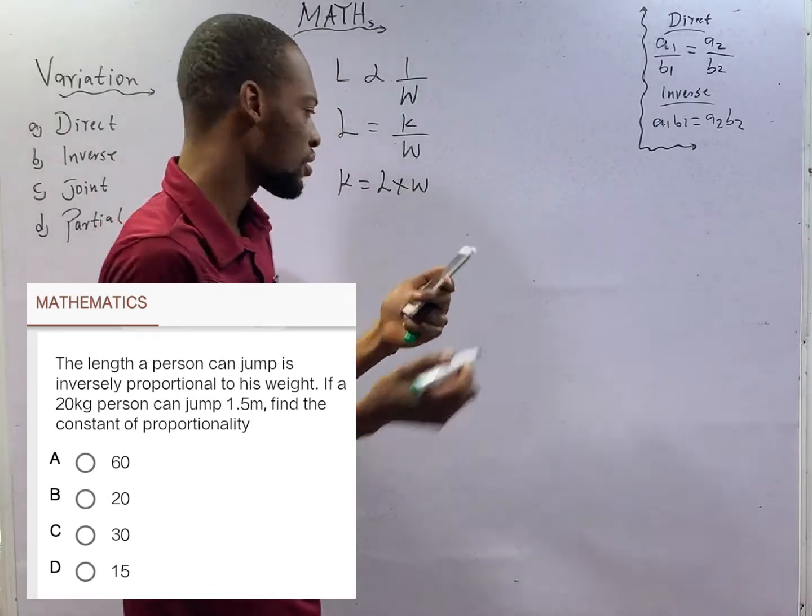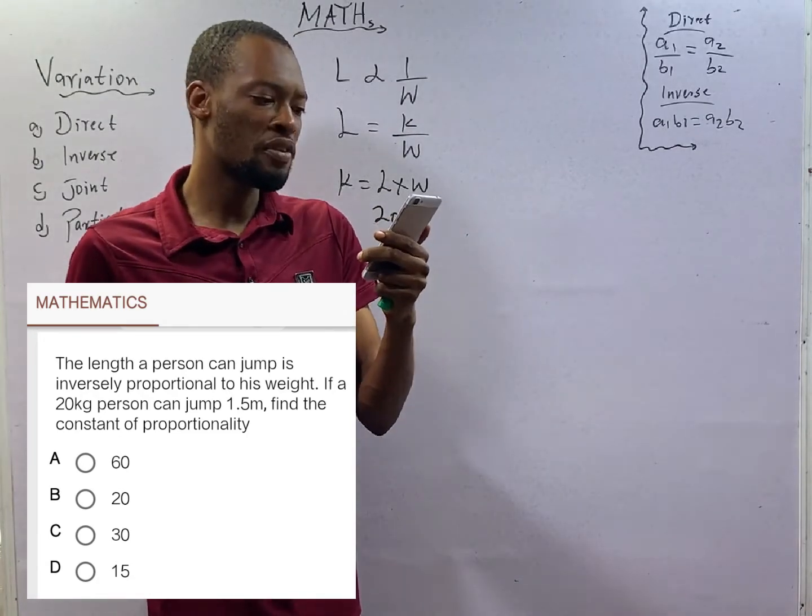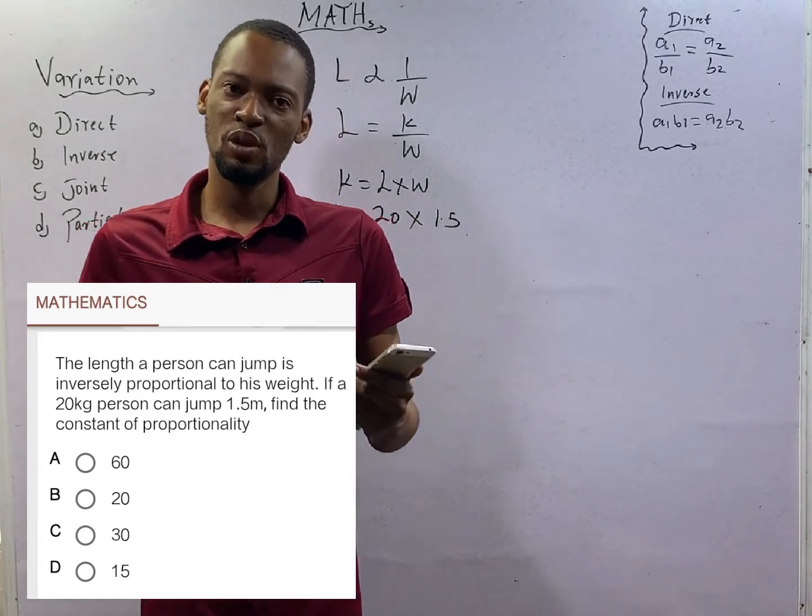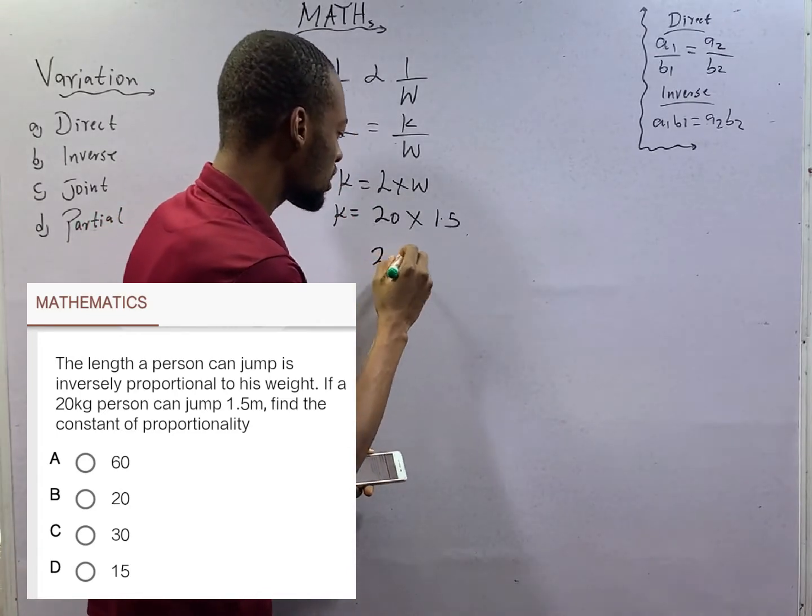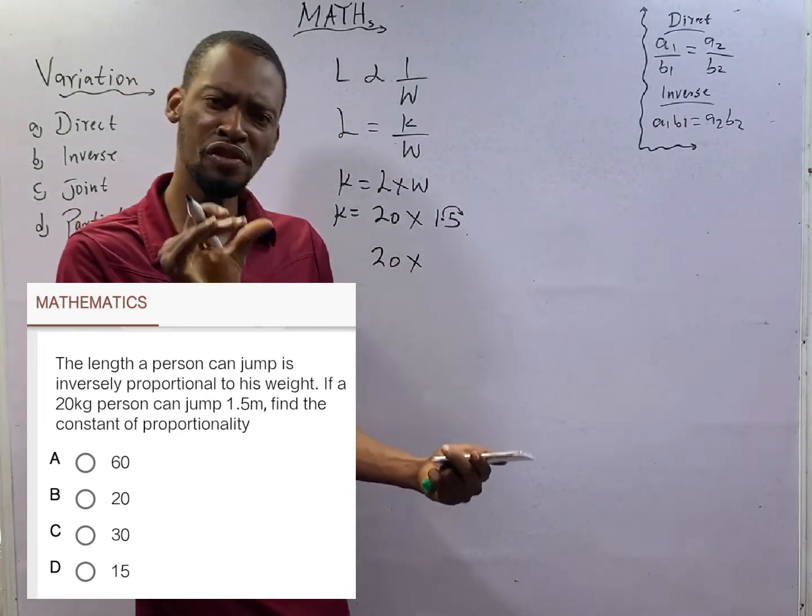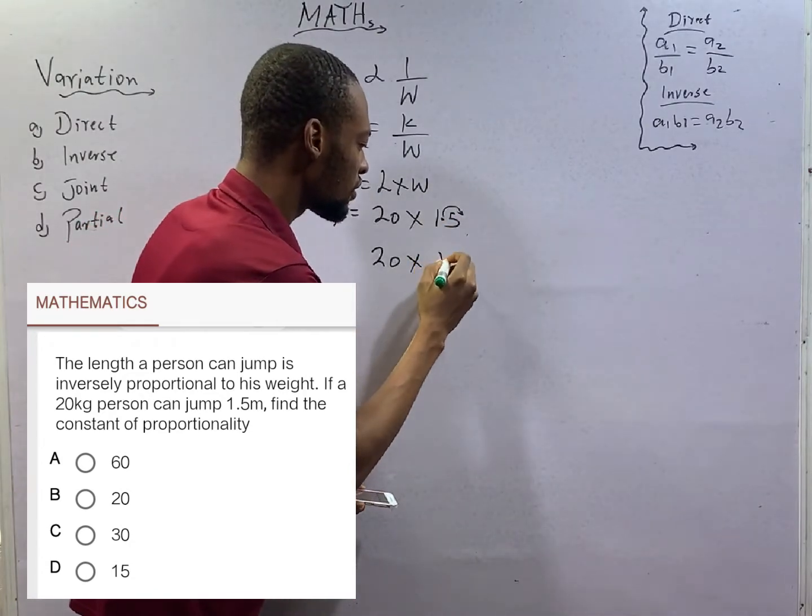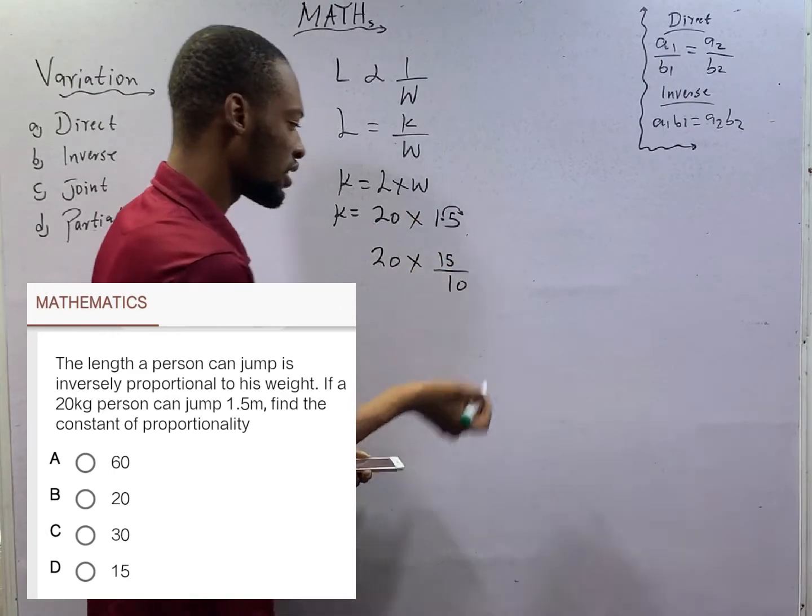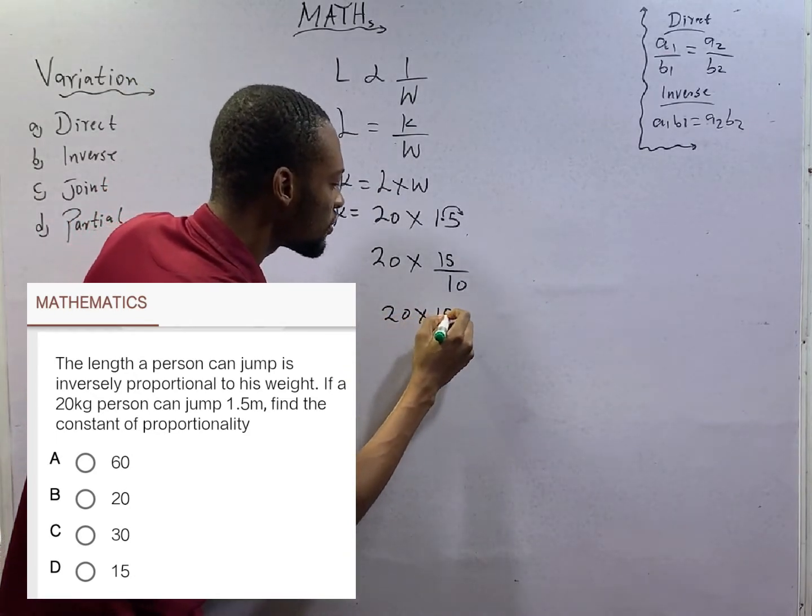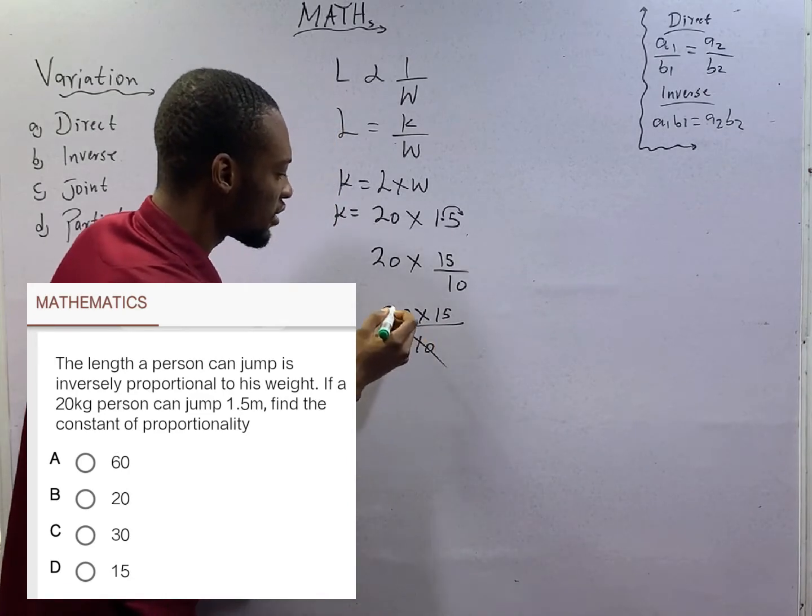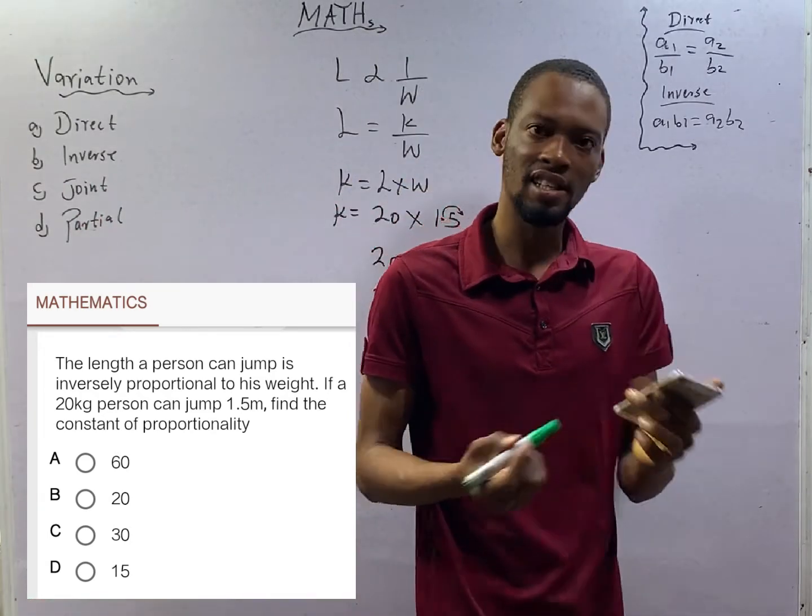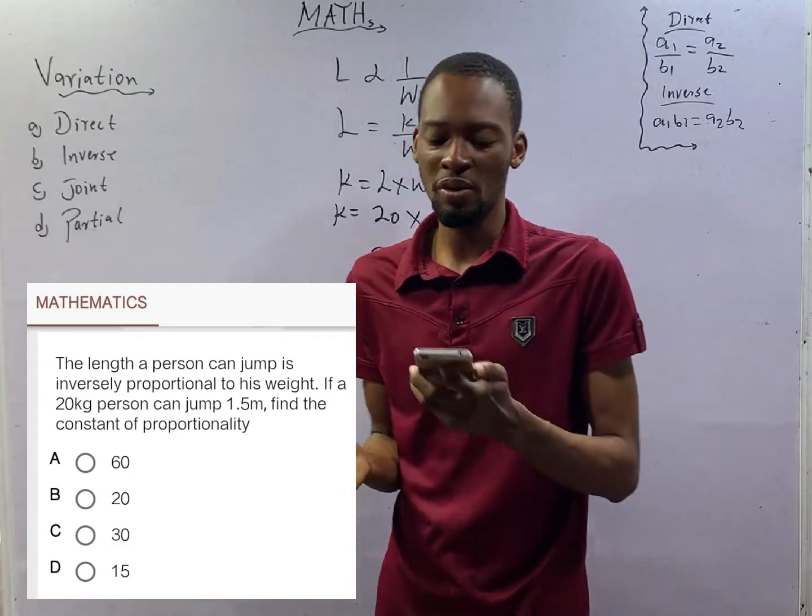If the weight is 20 kg and the length is 1.5 meters, the constant of proportionality will be 20 times 1.5. This is the same thing as 20 times 15 over 10. Ten goes into 20, that is 2, and 2 times 15 is 30. The constant of proportionality is 30.